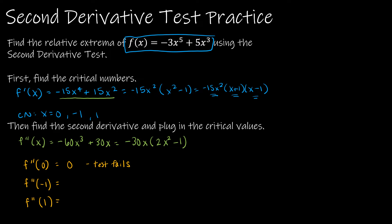Let's find f''(-1). That gives me -30(-1)(2(1) - 1) = positive 30 times 1, which is positive. I don't need to know the exact value — I just need to know it's positive. Positive means concave up, and concave up at a critical number means we're going to have a minimum, because the minimum occurs at the bottom of a valley.